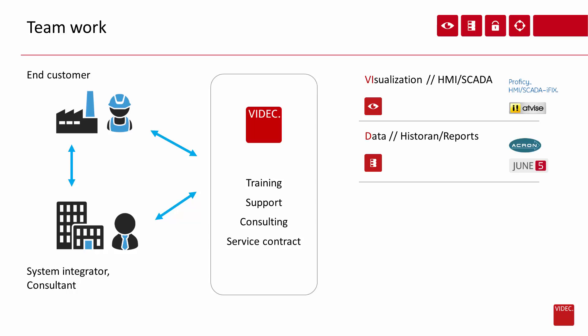For the historian family, we are the worldwide exclusive distributor of Akron. This popular historian and reporting system has today more than 15,000 installations worldwide. Together with our June 5, we publish the data in ordinary web browsers without using any plug-ins like Java, Silverlight or ActiveX Controls. The Ensure family covers our AIP product, a service-oriented system that catches alarms from various SCADA packages and distributes the entire alarm information to service units according to shift plans and escalation lists. For those who already know our MELSYS product: MELSYS is still available, but AIP is the consistent further development. New features and requests will be built into AIP.